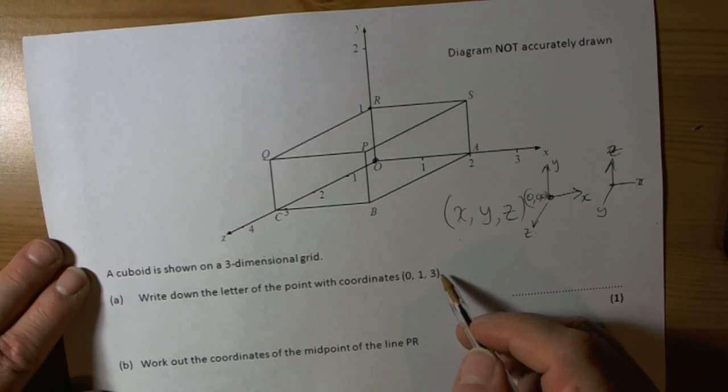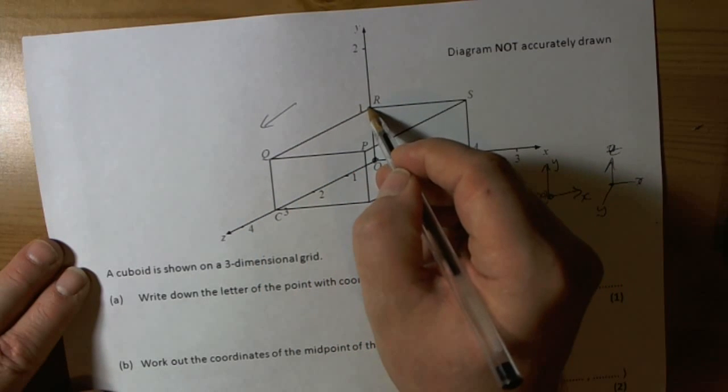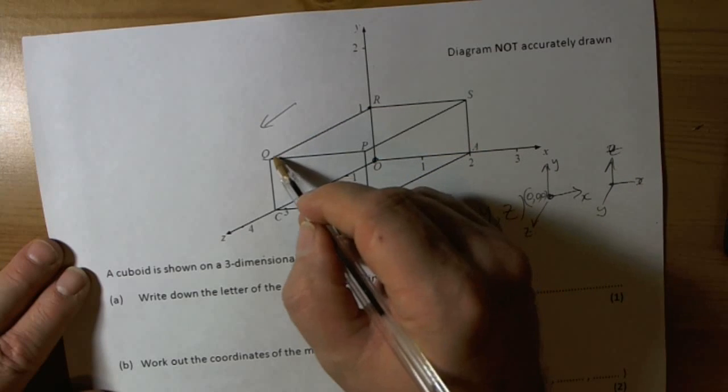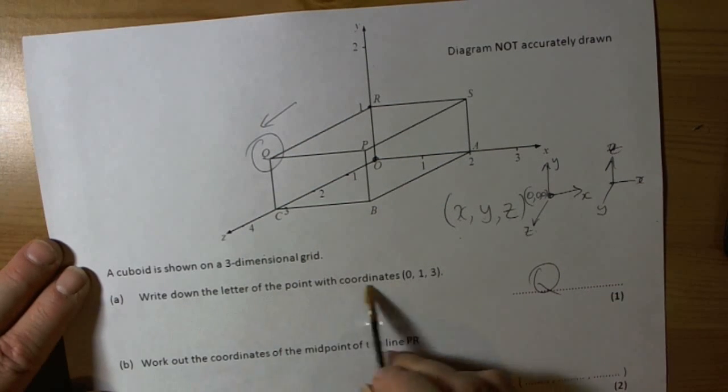And then it's telling us to go 3 on the Z direction. Now the Z direction's going in that direction, so we count along because we're at the top of the box: 1, 2, 3. So we've ended up at this point here. So the letter where we've got to is Q.